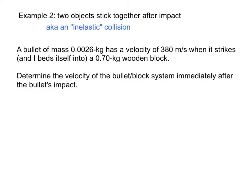If a bullet is shot into a wooden block, so it embeds itself. So a bullet mass 0.0026 kilograms, that has that velocity, and it embeds itself into a wooden block. Determine the velocity of the bullet and the block right after the bullet's impact.